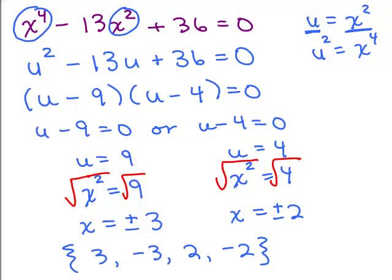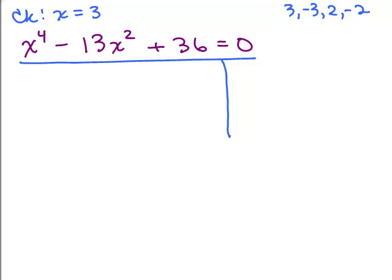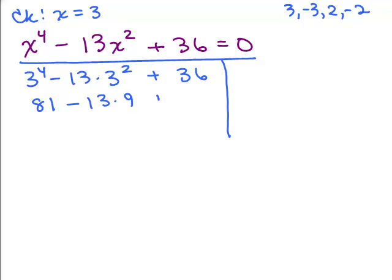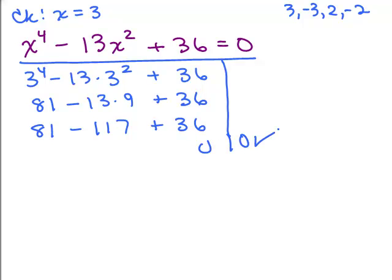We're not done — we need to check our work by substituting each solution into the original equation: x to the fourth minus 13x squared plus 36 equals 0. Checking x equals 3: 3 to the fourth minus 13 times 3 squared plus 36 gives 81 minus 117 plus 36. Adding 81 plus 36 gives 117 minus 117, which equals 0. That checks out.